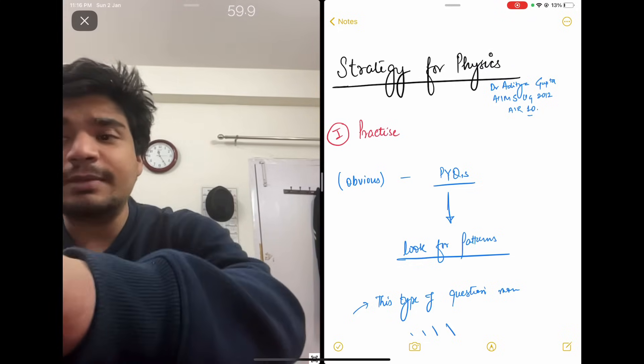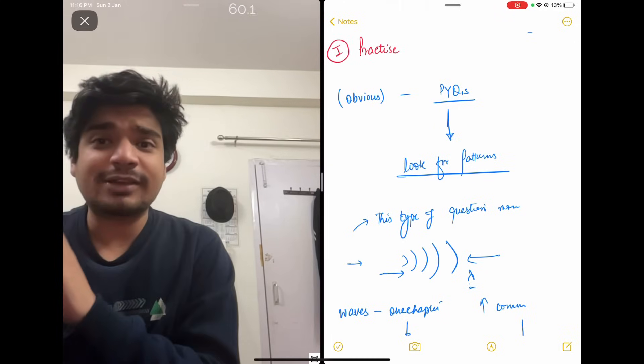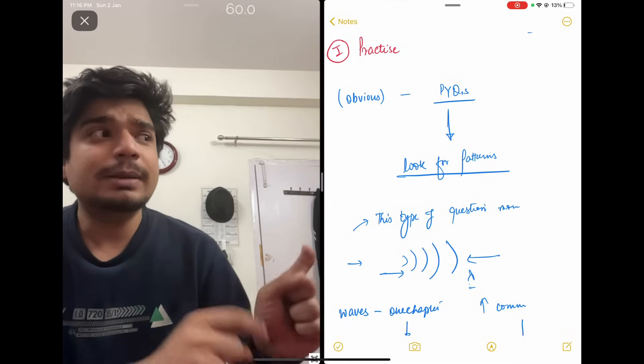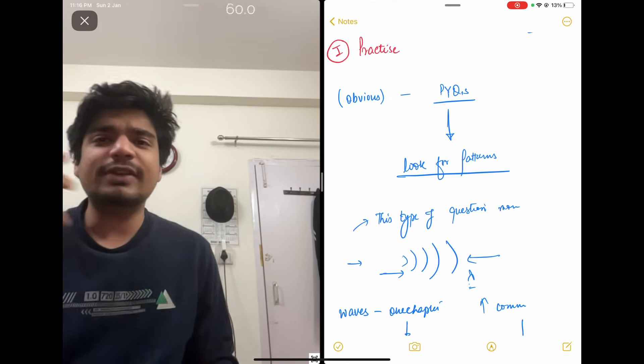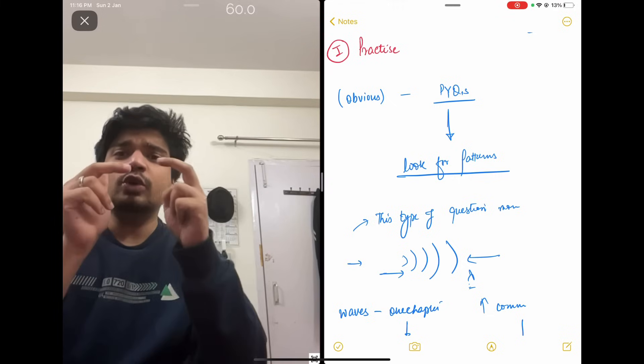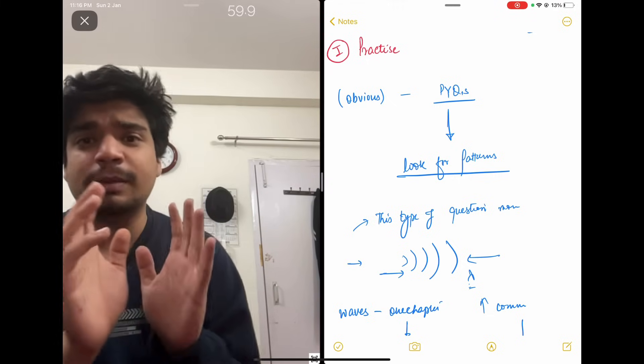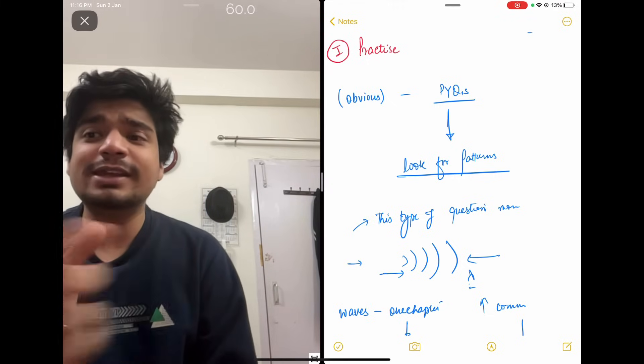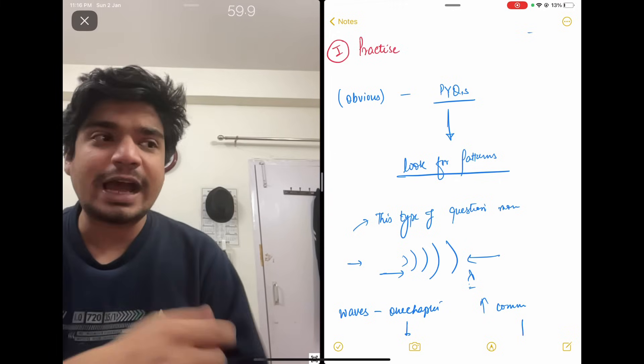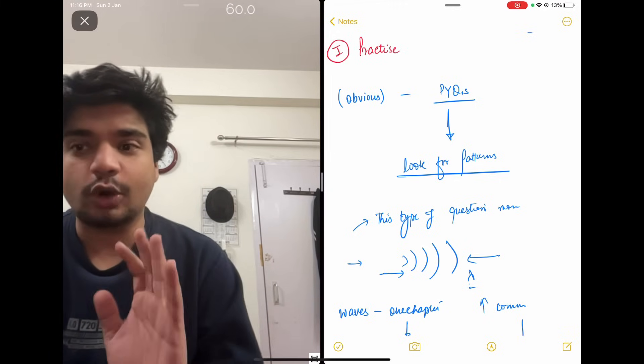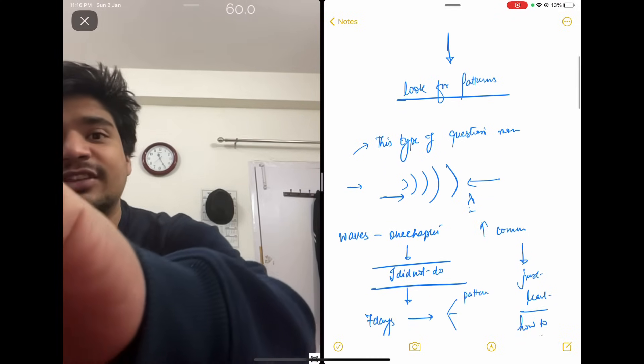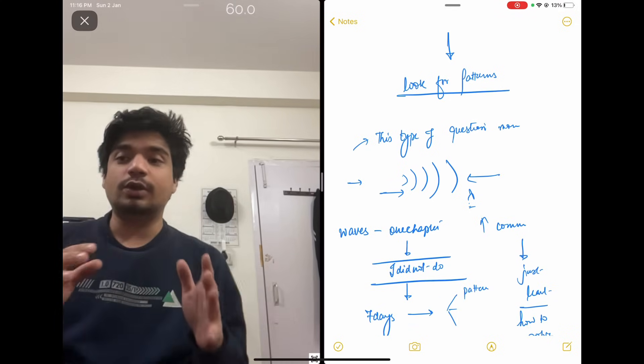I remember from my experience, my wave chapter as a whole was very bad. But because I had done previous year questions, I realized that on this Doppler effect, especially when two people move with each other, it's been asked. I didn't clear any other concept. These types of questions, I made sure that I kept on practicing. And these types of questions, I am never able to get a wrong answer. So this is what I will suggest to every one of you.